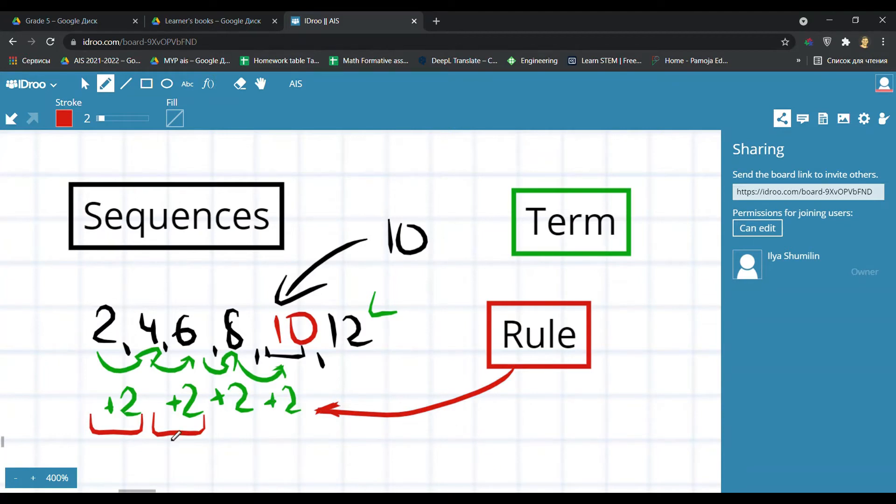But it's not the only thing. Somehow we should write down the whole rule. How can we write it down? Like the rule is to add number 2, but we can write it shortly, in a mathematical way.